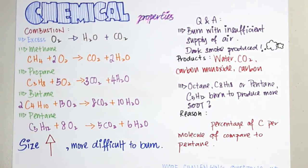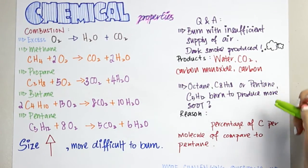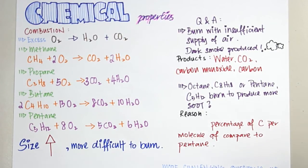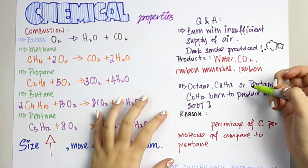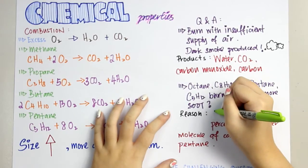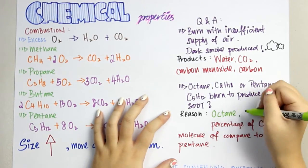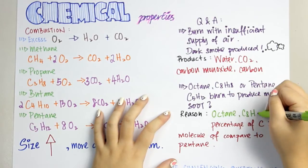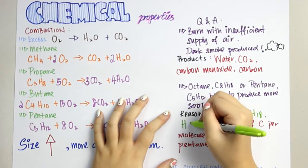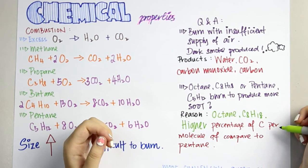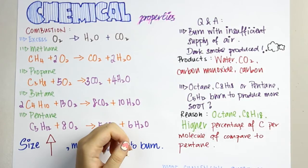Which burns to produce more soot — octane or pentane? We have to find out which of them has a greater size. Obviously, octane will produce more soot as its size is bigger than pentane. This is because octane has a higher percentage of carbon per molecule compared to pentane.